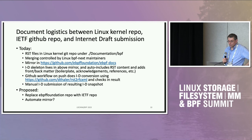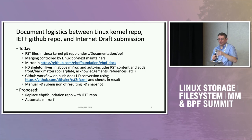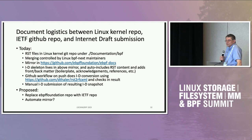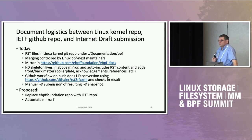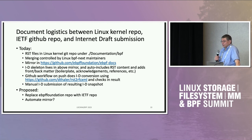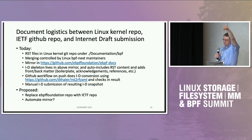Discussion came up: right now the mirror is under the eBPF Foundation. It's common IETF practice — not required, but at least half of working groups do it — to have an IETF GitHub organization per working group at github.com/ietf-[working-group-name] with repositories for drafts. The suggestion is: rather than keeping it under eBPF Foundation, move that repository under the IETF working group. That doesn't touch the kernel tree — it's just the mirror. Also, the mirroring process is currently manual and it would be great to automate it, though the draft generation snapshot remains manual, done before major conferences like IETF meetings.